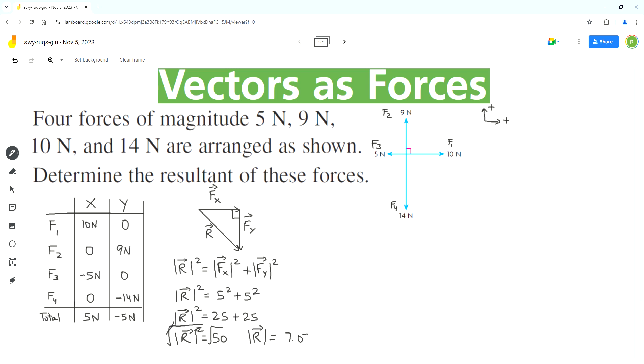So the magnitude of resultant vector is 7.07. I rounded the answer to two decimal places. This is the magnitude of the resultant.